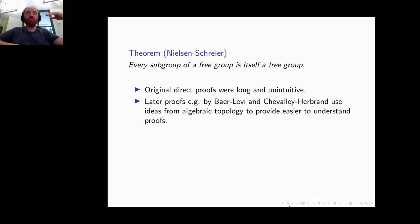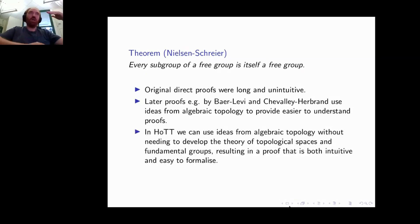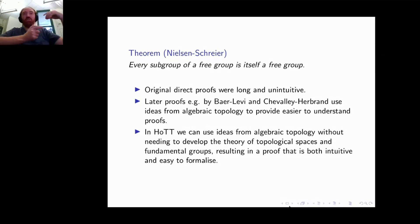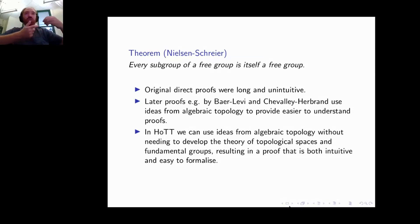The first proofs using topological ideas were by Baer-Levi and Chevalley-Herbrand, and this is probably the most commonly used proof today, because it's much clearer. This use of algebraic topology makes it an ideal candidate theorem to formalize in HoTT. In HoTT we can use the ideas from the algebraic topology proofs, but we don't actually need topological spaces and fundamental groups. We can just take the ideas and use them directly using types, giving us a proof that is intuitive yet easy to formalize.